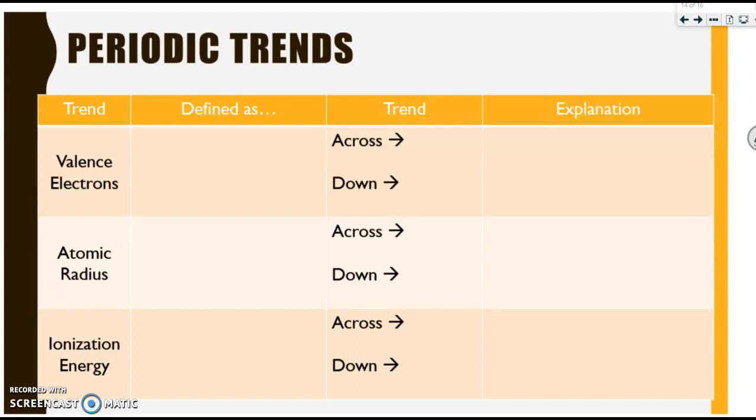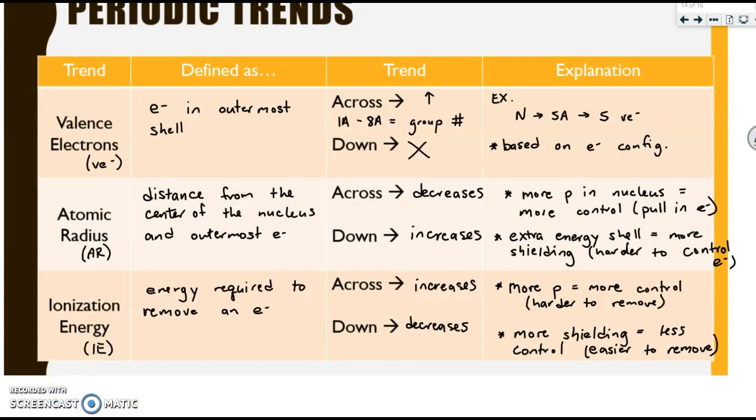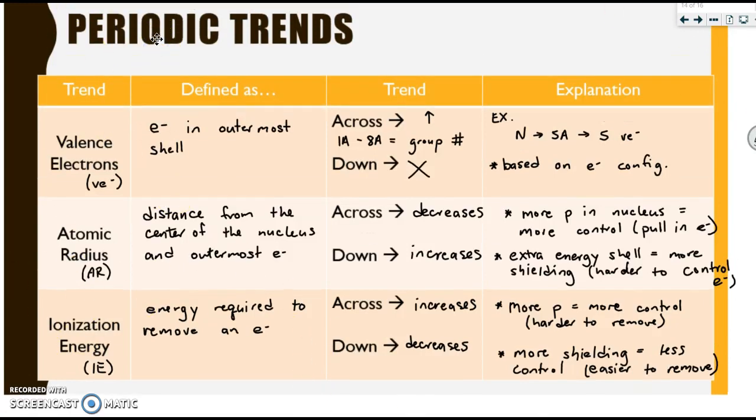Next, we are going to discuss a variety of periodic trends. At this point, you may want to pause the video for a few moments so that you can copy down the notes that are associated with our periodic trends. Okay, let's discuss. So valence electrons are the electrons in your outermost shell. As you travel across the table, they increase. For groups 1A through 8A, they are going to be equal to your group number. For example, nitrogen is found in group 5A or group 15. And therefore, it has five valence electrons. These are based on their electron configurations.